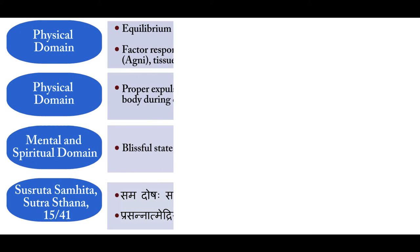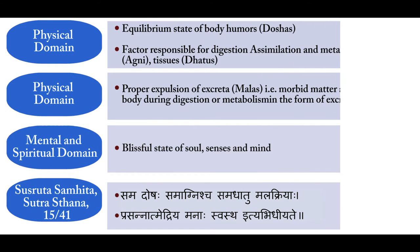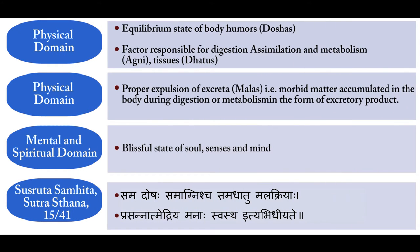Various domains have been described, including the physical domain, mental domain, and spiritual domain. In the physical domain, aspects like the equilibrium status of doshas are important. In Ayurveda, our body is made up of three doshas — Vata, Pitta and Kapha — and these should be in the state of normalcy.